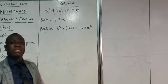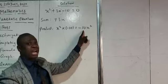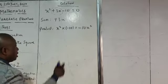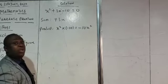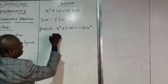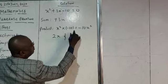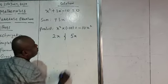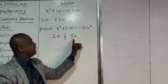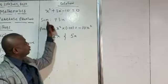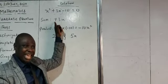It is simply by using the factorization method. I will just break this down into simple factors. Now we know that there we only have two factors which are 2 and 5. Now in this case, in the product we are having minus 10. In the sum we are having plus 3x.